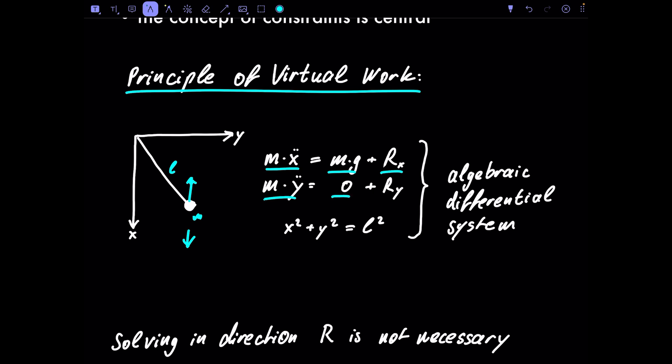There are zero applied forces in y because gravity only acts in direction x, but we do have a force in y from the reaction force. The resultant of the x and y reaction force components points toward the center from our mass. We also have a constraint to consider: the length of the pendulum must always stay constant, so x² + y² = l².